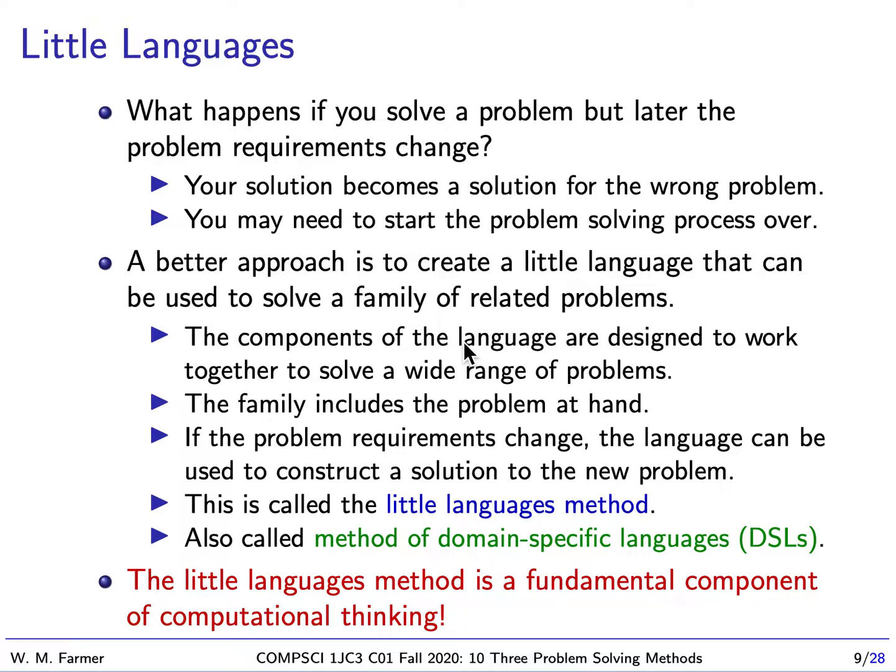Imagine that you have a problem and you solve the problem. With a problem you have a set of requirements, you come up with an implementation that satisfies all the requirements. But let's say some of those requirements have changed. Now you have a solution to the wrong problem. You have to solve the problem again, and this shows a weakness of the approach where you just come up with a solution to a particular problem.